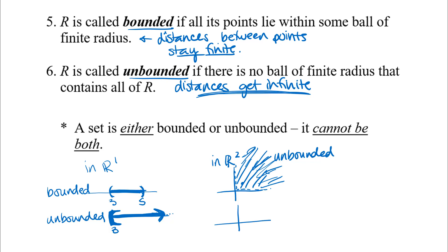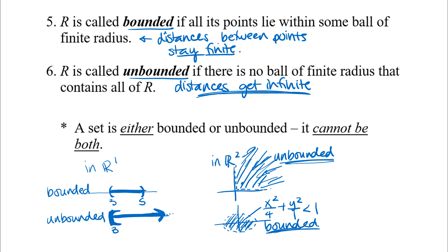In R2, the first quadrant not including the edges is an example of an unbounded region — the distances go off forever to the right. A bounded region in R2 might be the points inside an ellipse, like x²/4 + y²/1 < 1 — all those points are within finite distance of each other. Students often confuse bounded/unbounded with open/closed, but bounded and unbounded have to do with whether distances stay finite or go to infinity, not whether the boundary is included. We'll look at examples applying these words to domains and ranges of functions in the next video.